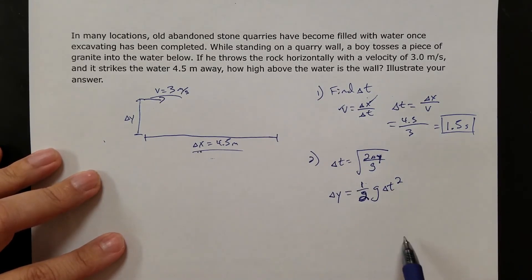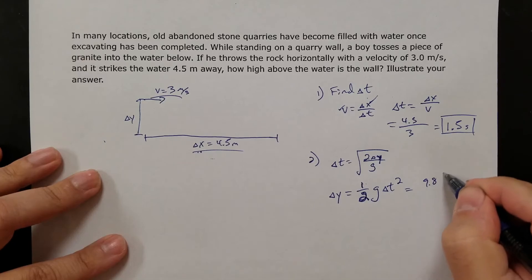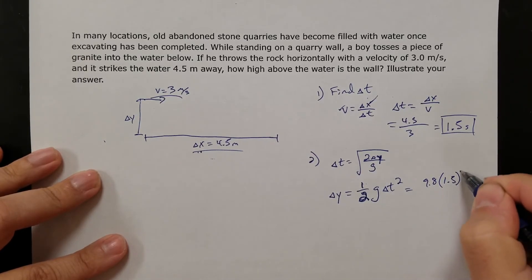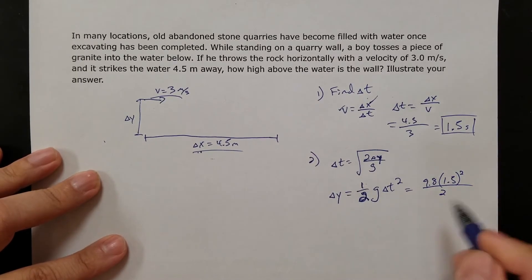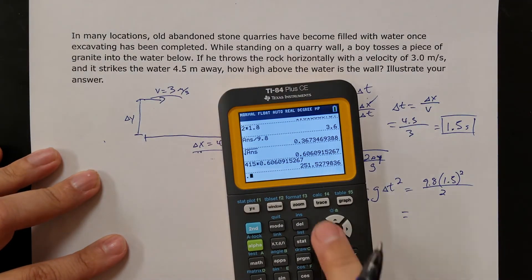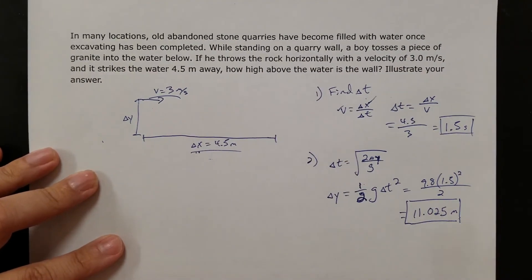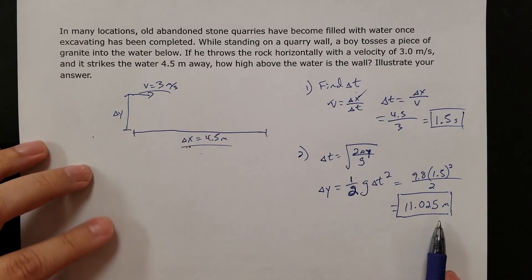So look, I know g, I know t, I can solve for delta y. So it's going to be 9.8 times 1.5 squared over 2. The half. And if I do that, let's find out. I get 11.025 meters.